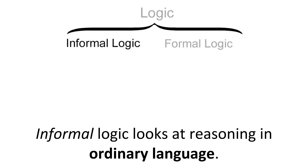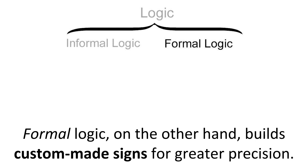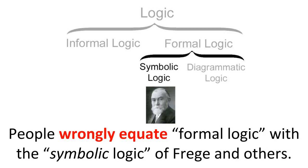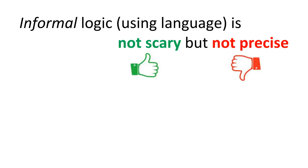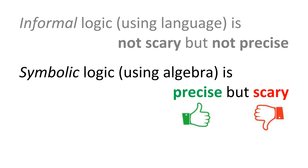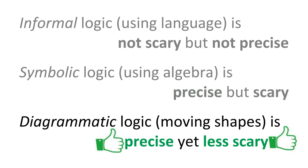Informal logic looks at reasoning in ordinary language. Formal logic, on the other hand, builds custom-made signs for greater precision. People wrongly equate formal logic with the symbolic logic of Frege and others, but this overlooks the powerful diagrammatic logic pioneered by Peirce. Informal logic, using language, is not scary but not precise. Symbolic logic, using algebra, is precise but scary. Diagrammatic logic, moving shapes, is precise yet less scary.